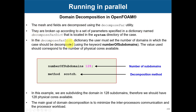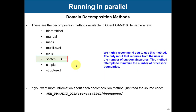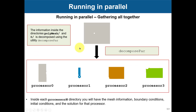The `decomposeParDict` dictionary file contains the keyword for the number of subdomains, which equals the number of cores you want to use. In this case we are saying we want to run with 128 cores. Then there is the method — there are many decomposition methods available, but our advice is to always use `scotch`. It does a very good job. There are also methods like `simple`, `hierarchical`, and `manual` where you need to define things yourself, but we always recommend `scotch`, which is equivalent to Metis.